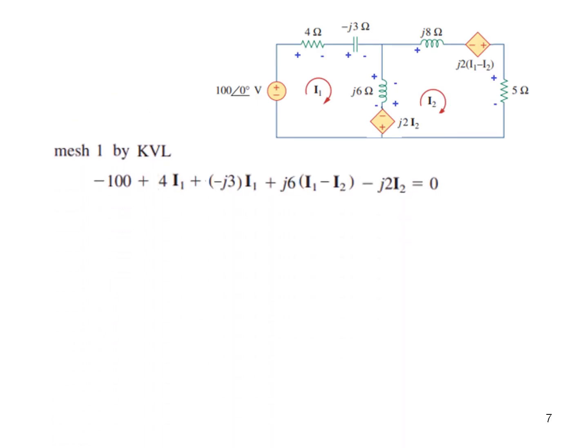So for mesh 1 we start from here: minus 100 plus 4 I1 plus minus J3 I1 plus J6 I1 minus I2 and minus J2 I2. And simplifying we get this equation. We are just collecting the like terms. So this was for mesh 1.